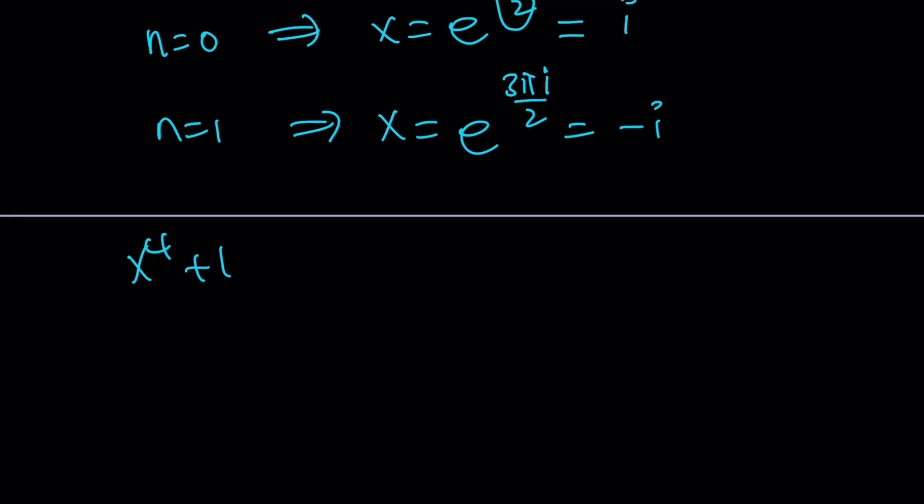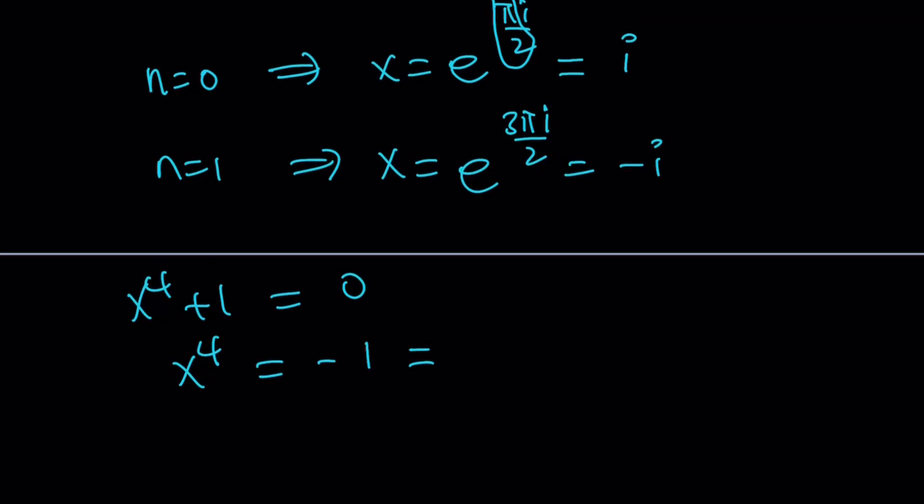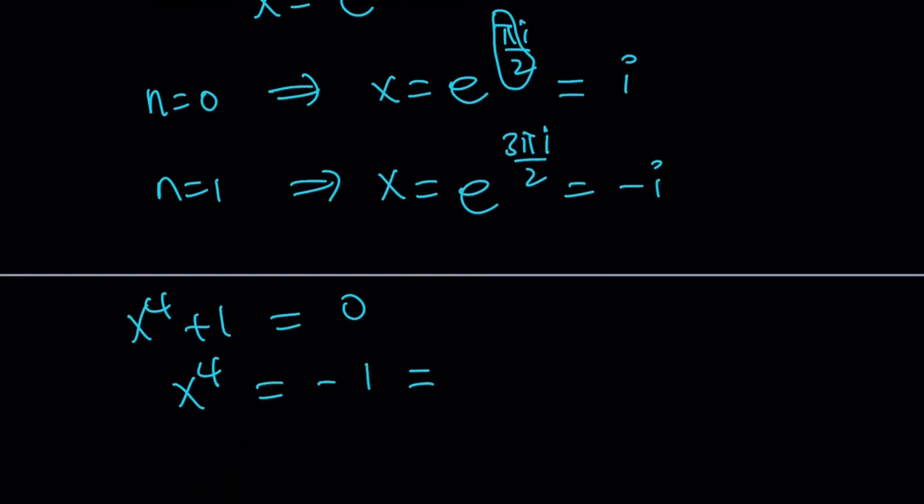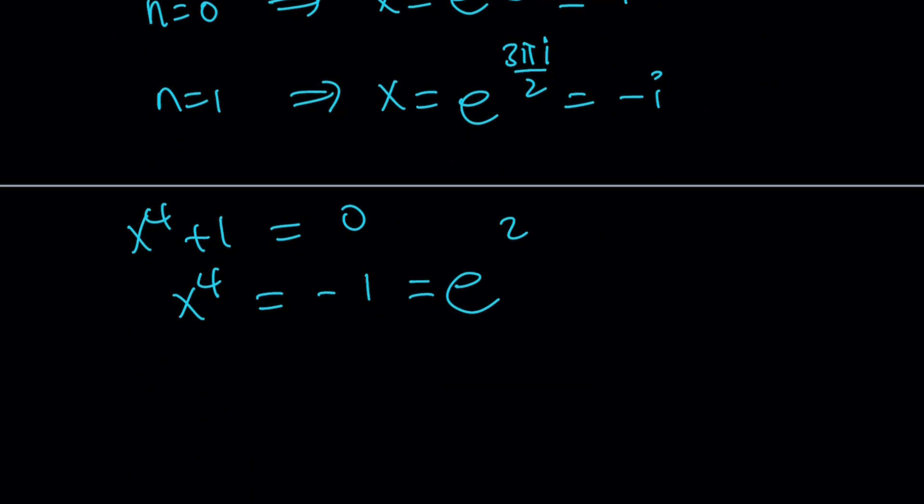x^4 + 1 = 0 is the other factor. x^4 = -1 from here. And now, we're faced with the fourth complex roots of -1. Again, -1 can be written as e^((2n+1)πi).